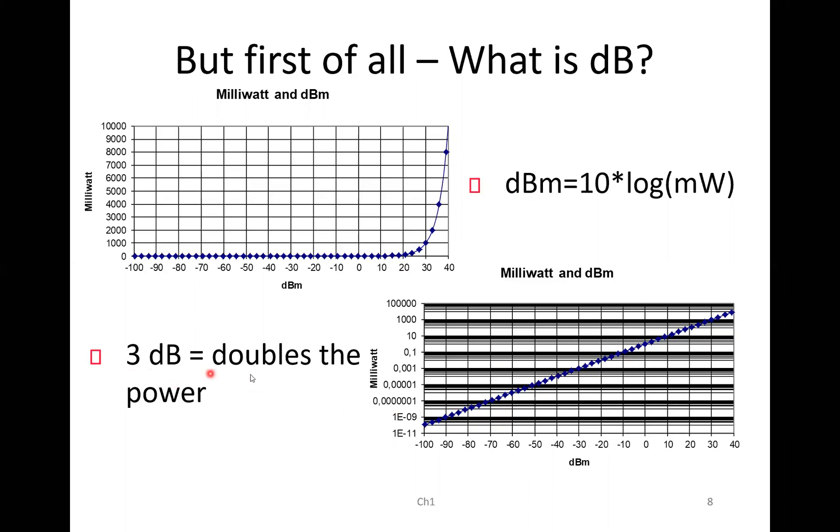3 dB doubles the power. So we are typically sending out something like 30 dBm, which is one watt. And then we are receiving something in this here somewhere. And then it's very nice to have the dB scale because you see that the linear scale that doesn't really tell you much. It's just flat here. So that is why we are using the dB scale.